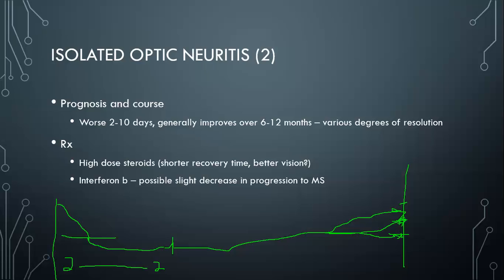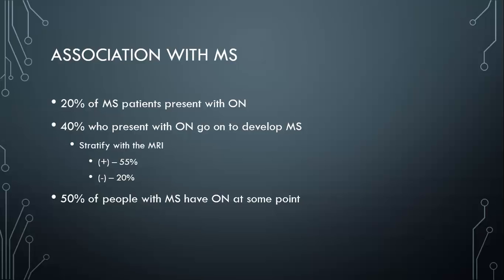If someone is diagnosed or you're very suspicious of optic neuritis, the big question on their mind will be: what's the chance I'm going to have MS? To think about the association: 20% of people with MS present with optic neuritis. About 40% of all people with optic neuritis go on to develop MS. MRI is important for risk stratification — if you have lesions suggestive of MS on MRI, your chance of progressing to MS is about 55%; whereas if you don't see lesions, your risk is only about 20%. And about 50% of all people with MS will have optic neuritis at some point.